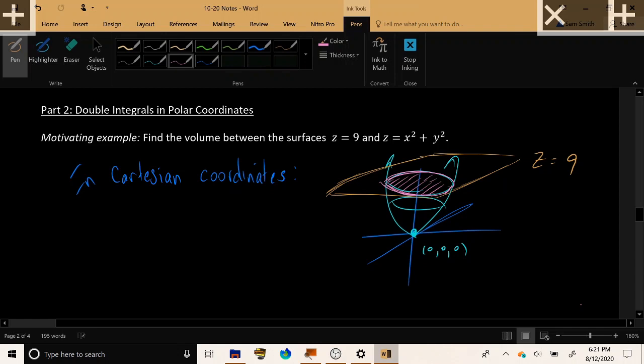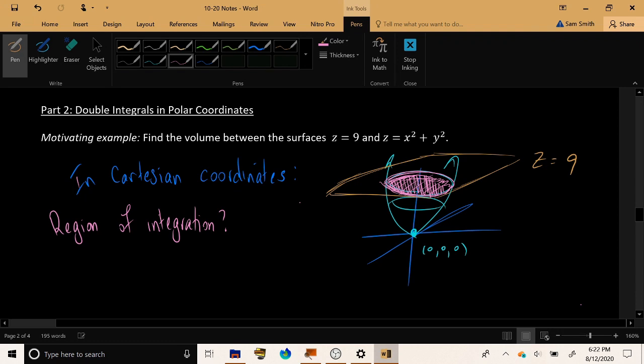Our goal is to find the region between the paraboloid on the bottom and the plane on the top. Now let's think about the region of integration that we should use. Since we're trying to find the volume between these two and a specific region has not been given to us, let's try to figure out where the paraboloid and the plane intersect each other.